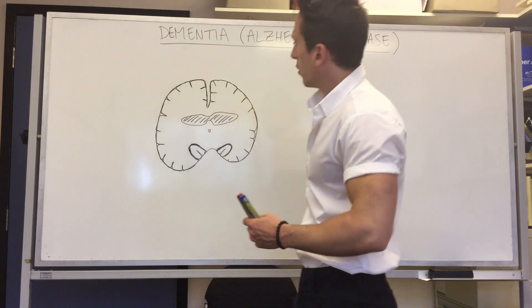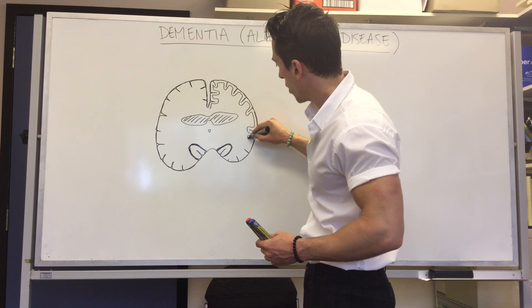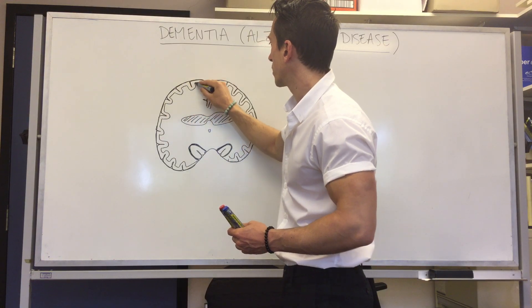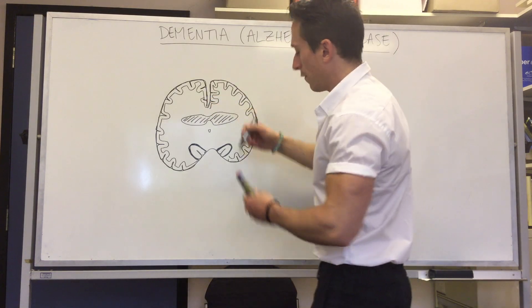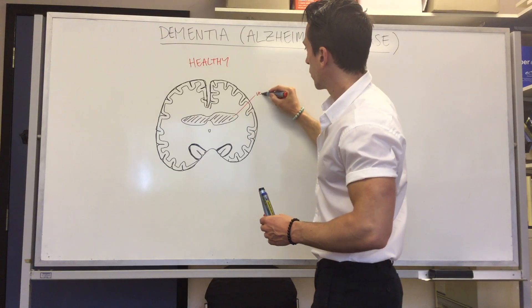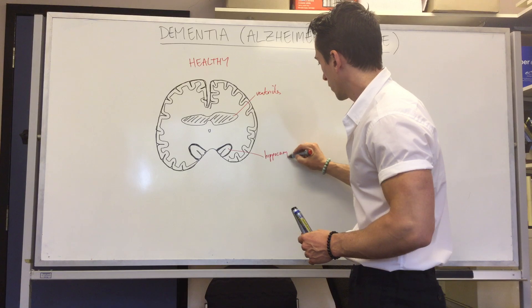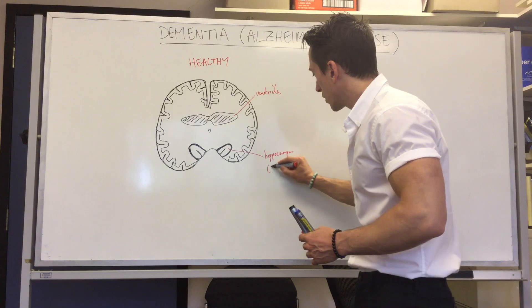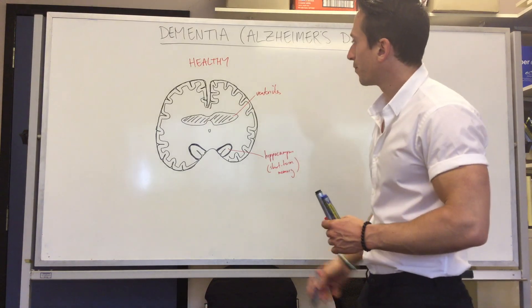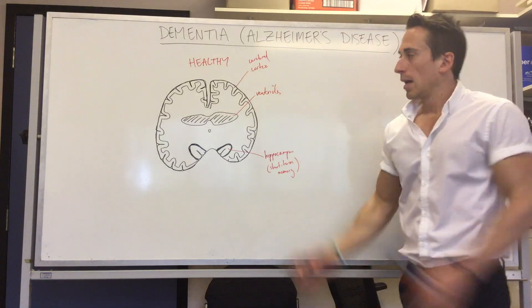The cortex is the thin outer layer of the cerebrum, associated with motor or sensory function depending on region. To summarize the healthy brain diagram: you have ventricles of a normal size, you have the hippocampus — which is involved in short-term memory storage — and you have the cerebral cortex.